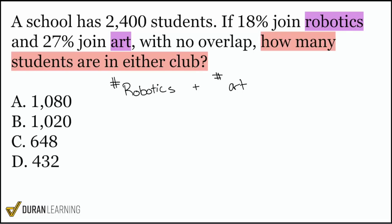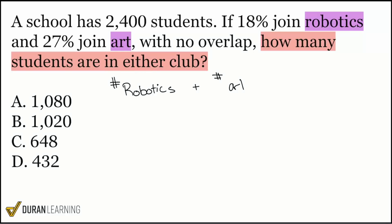I'm going to perform the solution to this problem in two ways. Number one, I'm going to show you if we calculate robotics and art and then add them together. And then the other way is going to be much faster, but let me get through the first way first. So let's go ahead and look at robotics.